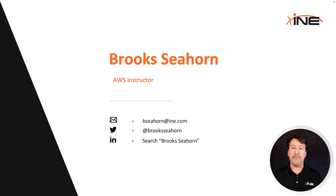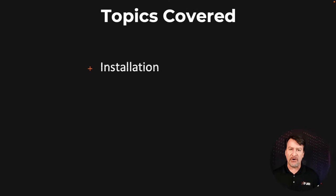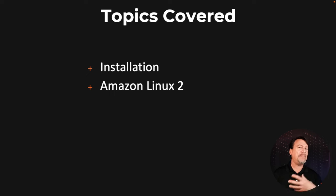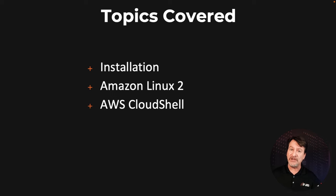I'd be happy to help you. What will we be talking about? How do you install the AWS CLI? That includes configuration, security, and verification. How is it set up on an Amazon Linux 2 EC2 instance? Is it available in the Cloud Shell, and how is it configured there?